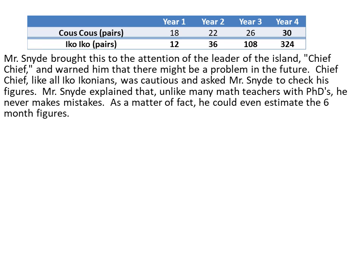Mr. Snide explained that, unlike many math teachers with PhDs, he never makes mistakes. As a matter of fact, he could even estimate the six-month figure. So for instance, for the arithmetic sequence, since it went up four each year, how much would it go up every half year?